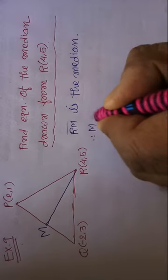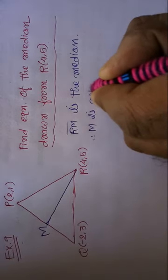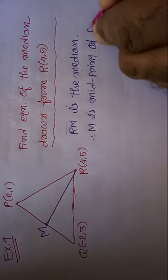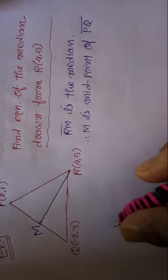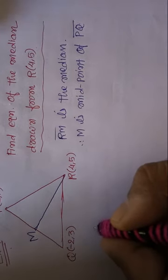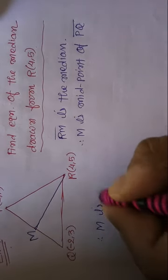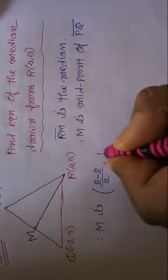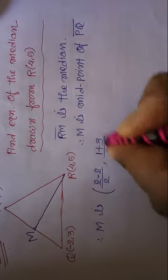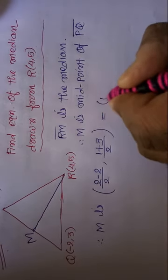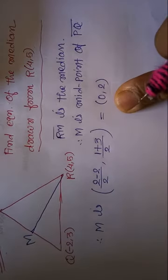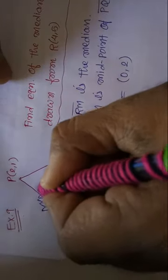M is the midpoint of line segment PQ. So you can find point M easily. Point M is the average of the coordinates: (2 + (-2))/2 and (1+3)/2, which gives us M = (0, 2).